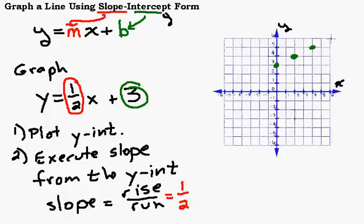Rise 1, run 2, make a dot. And then I have all these points in a line. And I connect these points. And that is the graph of the line.